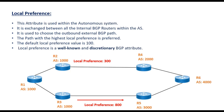Next is local preference. This attribute is used within the autonomous system and is exchanged between internal BGP routers within the AS. It is used to identify and select the outbound external BGP path — specifically, through which router traffic from a particular AS should exit to another AS. The path with the highest local preference is preferred.